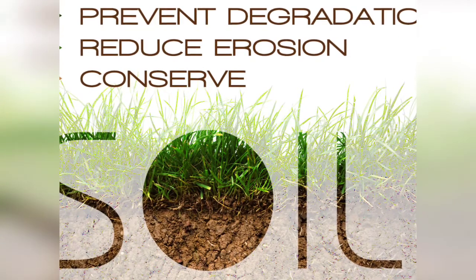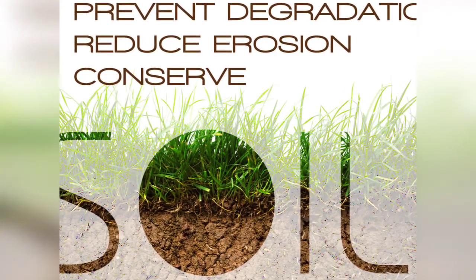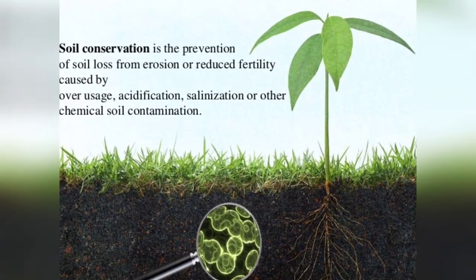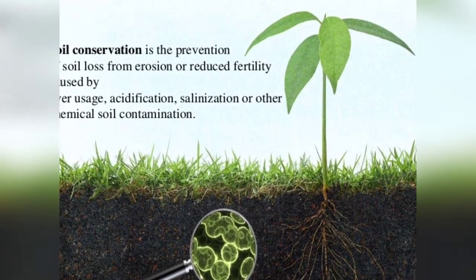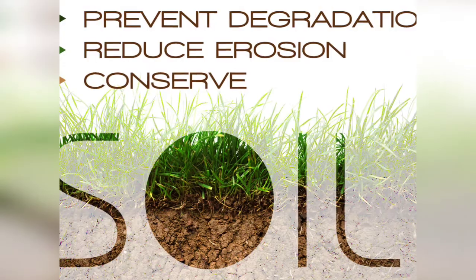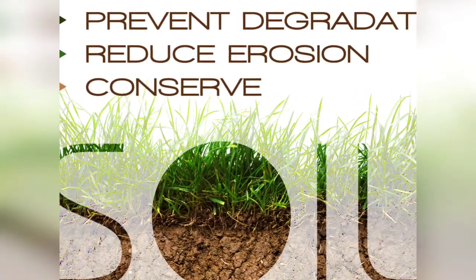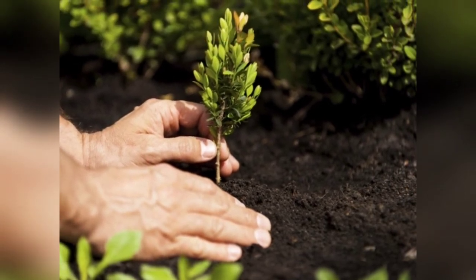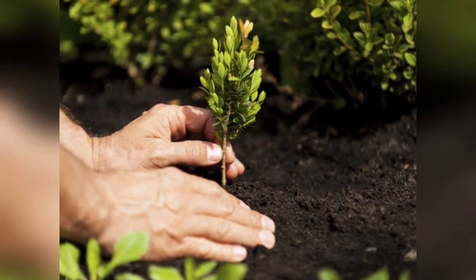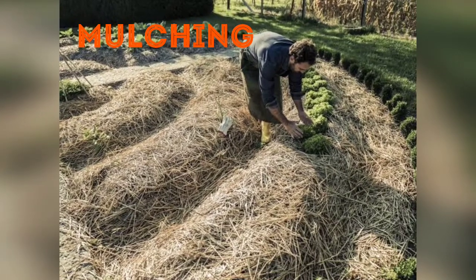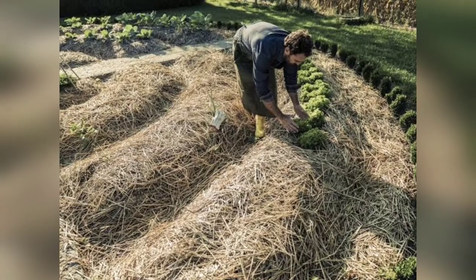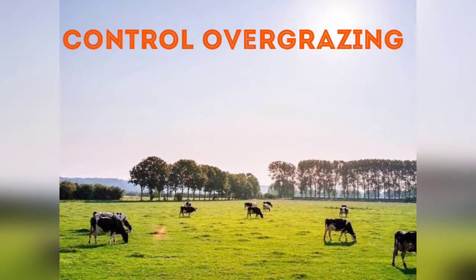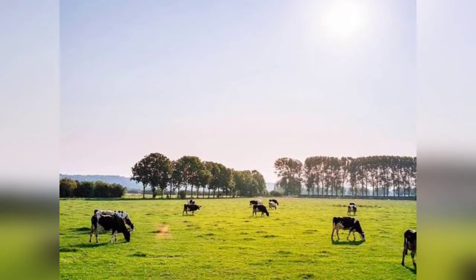To reduce soil erosion, we need to conserve soil. Soil conservation comprises preservation, protection, and utilization of soil. Soil conservation is an effort made by man to prevent soil erosion in order to retain soil fertility. Afforestation, or planting of trees at short distances, provides a shelter belt for soil. In mulching, organic matter like straw and grass is used to cover bare ground to help soil retain moisture. Overgrazing must be controlled properly, and fodder should be raised as a crop, because free movement of animals makes soil particles loose.